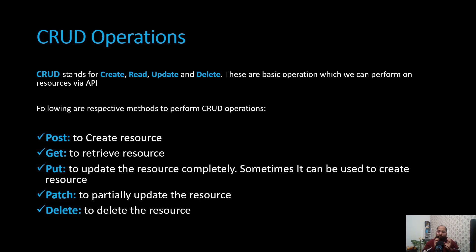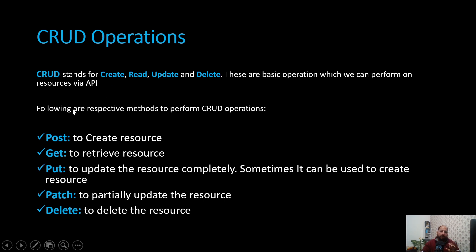As we just discussed, these operations are called CRUD operations. CRUD stands for Create, Read, Update, and Delete — the basic operations performed on resources via API. POST maps to Create, GET maps to Read, PUT maps to Update the resource completely (and sometimes can also create), PATCH maps to partial Update, and DELETE maps to Delete. You may encounter CRUD operations as an interview question when asked what operations you use for hitting endpoints.